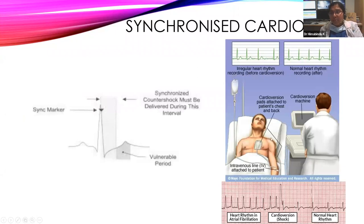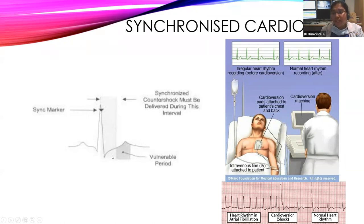The cardioversion shock must be delivered during the QRS complex — starting from the peak of the R wave and completed before the T wave. The T wave represents the vulnerable period; if a shock is delivered during this period, the heart can go into VF or VT. The defibrillator is designed so that in synchronization mode it detects the peak of the R wave on the ECG and delivers the shock in less than 4 milliseconds, completing before the T wave.